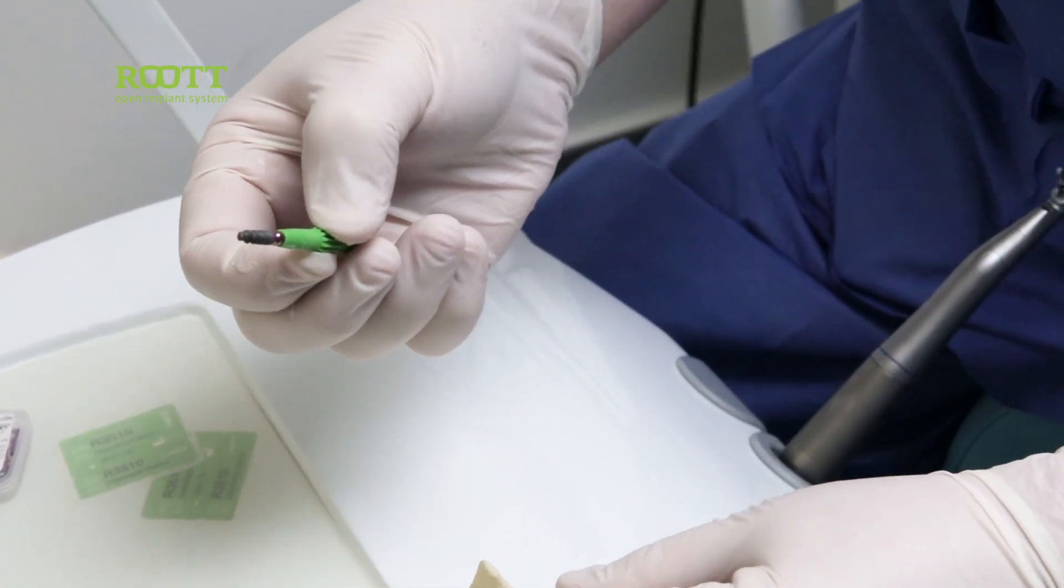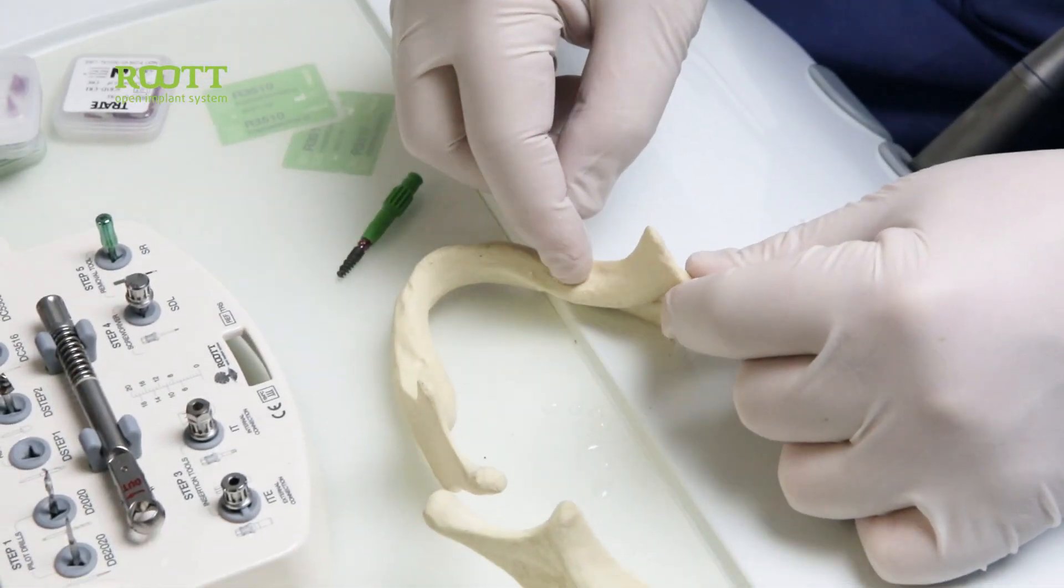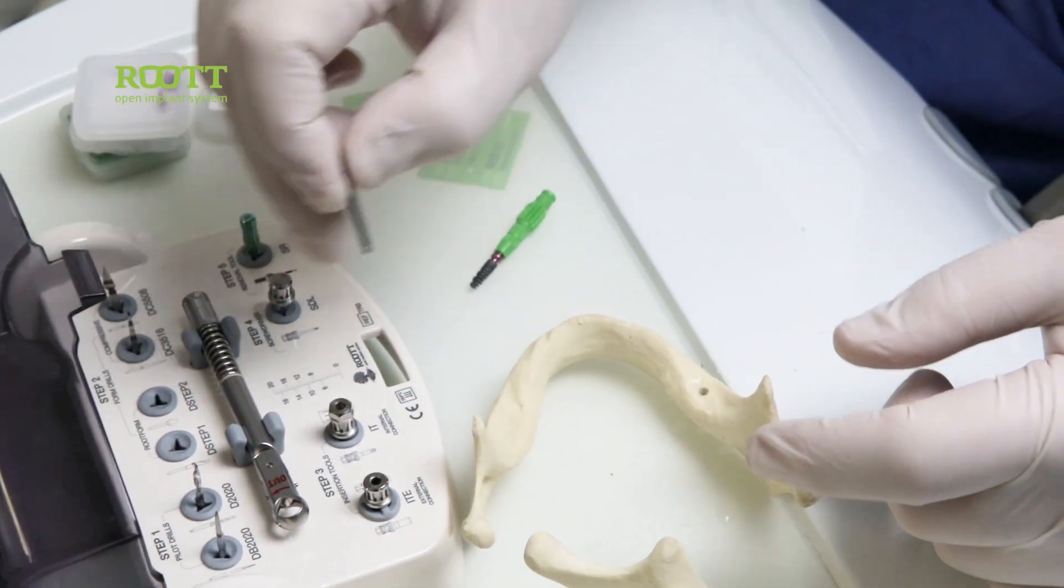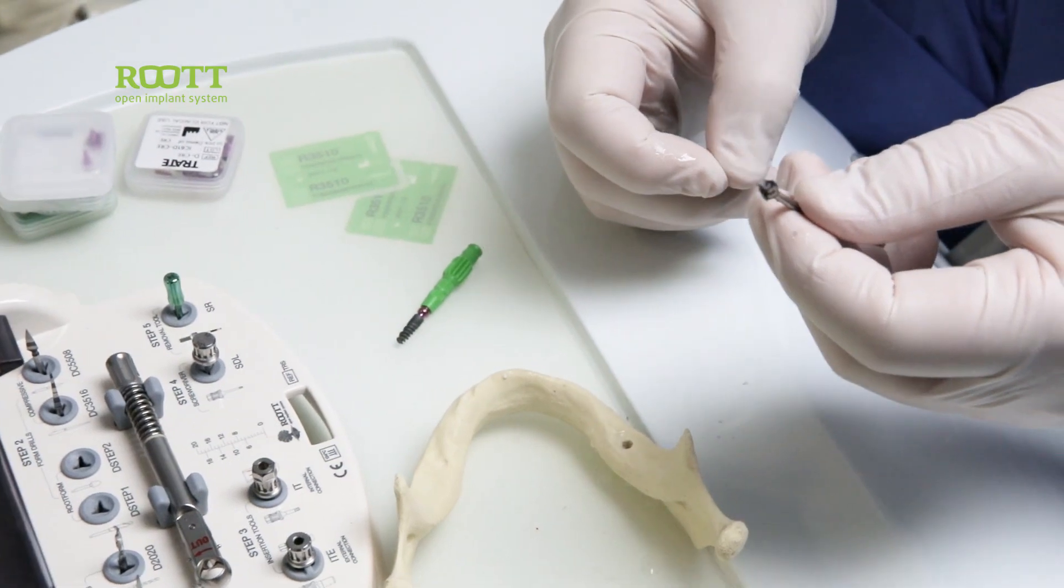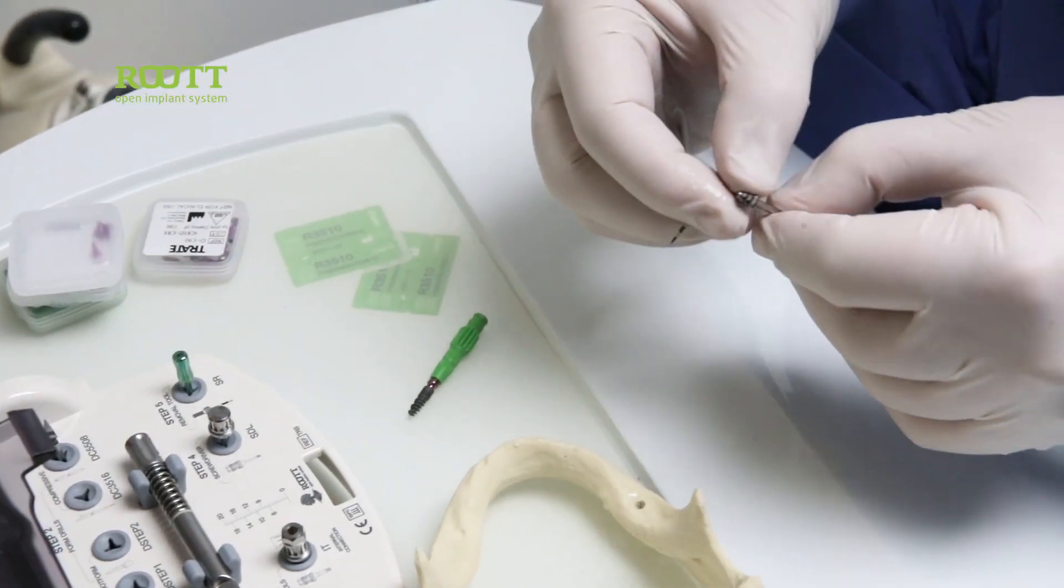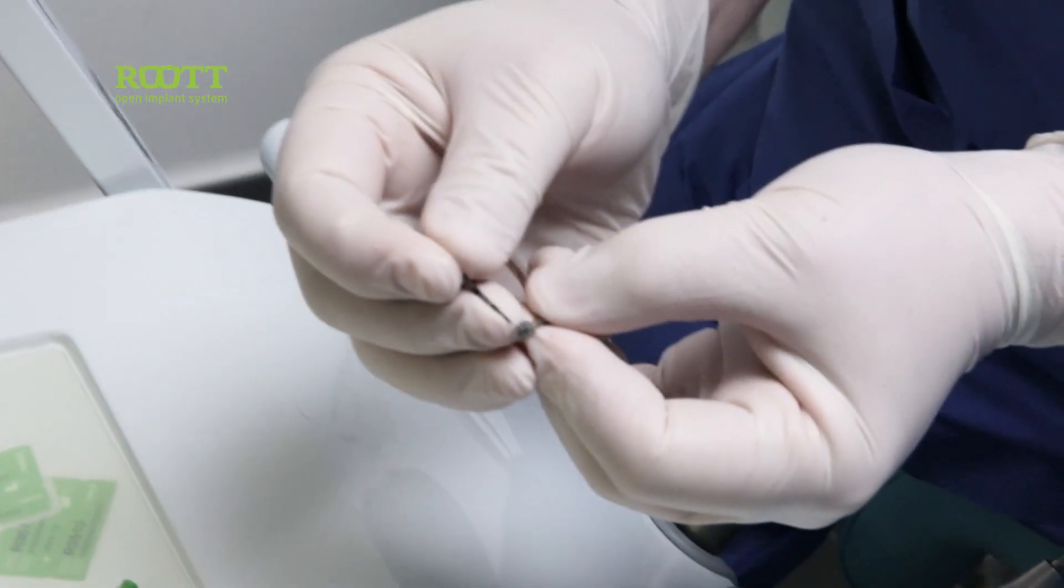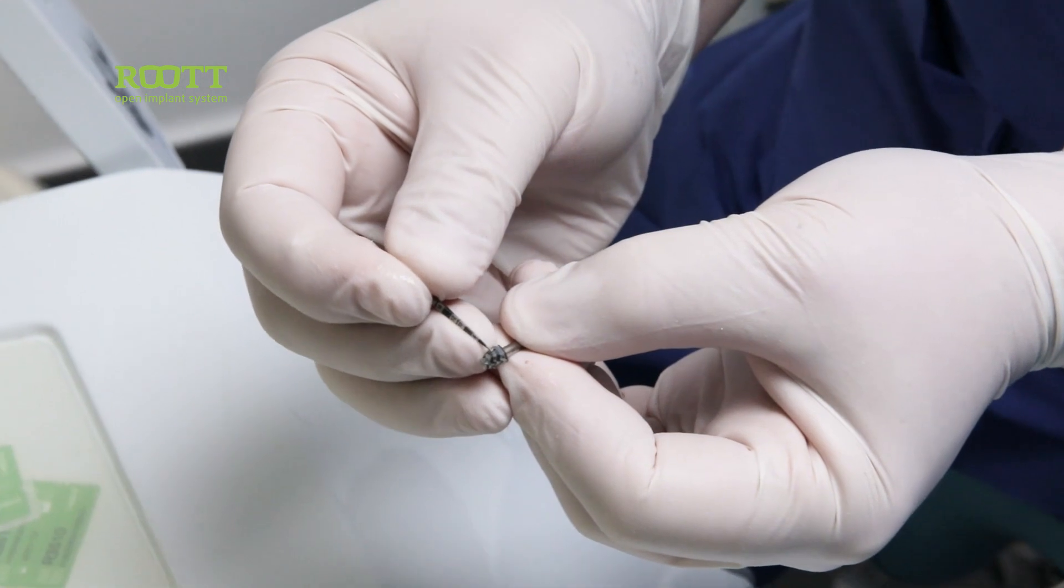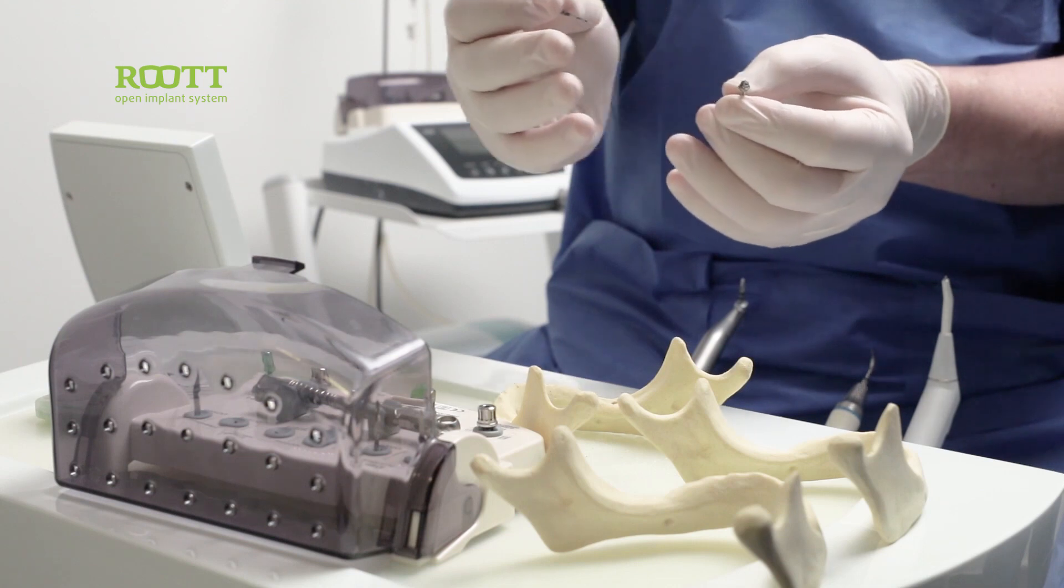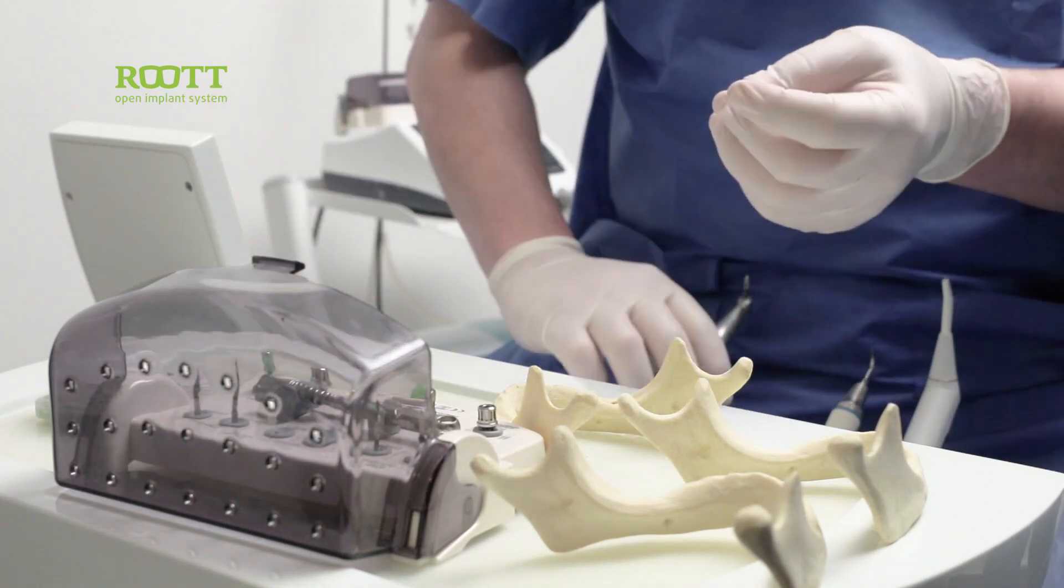Then we can place already the implant. If we have a high cortical here and we need to place wider implant, we can use the D-step two. The D-step two, it has also a laser mark. If we are placing a 3.5 implant, we go to the first laser mark. 3.8, 4.2, 4.8, and 5. The wider is the implant, the more that we go with this D-step two.